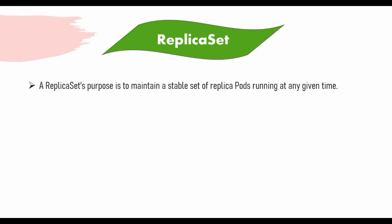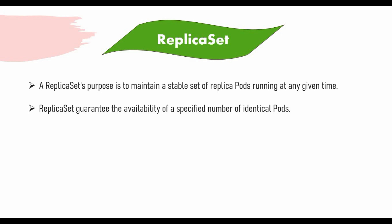Before we get into that, let's talk about what a replica set is. The replica set's purpose is to maintain a stable set of replica pods running at any given time. When you create a pod manually and it gets deleted, you have to recreate it manually. But with a replica set, you define how many pods you need and it will make sure those pods are always running, even if some pods get deleted or switched off. The replica set guarantees the availability of a specified number of identical pods.